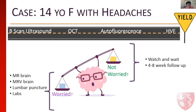At this point you wonder: do we worry or not worry? If I wasn't worried, I would watch and wait — see them back in about four to eight weeks. If I was worried, I would proceed with a brain MRI, an MRV of the brain, a lumbar puncture, and labs. So where do you fall as a provider? Can you tell this mom that this is not a brain tumor? And if you can't, do we send them straight to the emergency room to get the MRI, MRV, and lumbar puncture? Will they need sedation? If they need sedation, maybe it's a straight shot to an admission. These are the questions that in pediatrics we're often faced with.